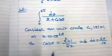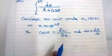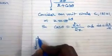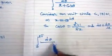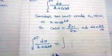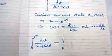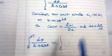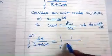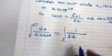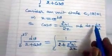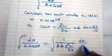Now substituting into the given integral, the integral from 0 to 2π of dθ / (2 + cos θ) is converted in terms of z: it becomes the contour integral over C of 1 / (2 + (z² + 1)/2z) multiplied by dz / iz.